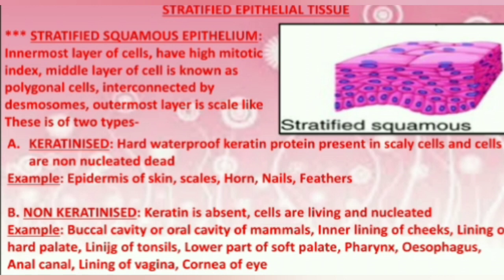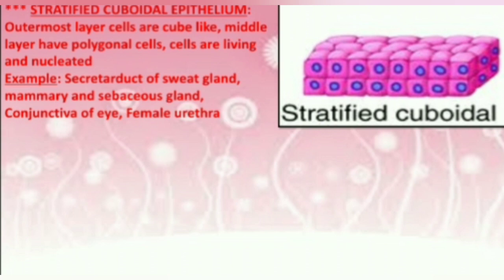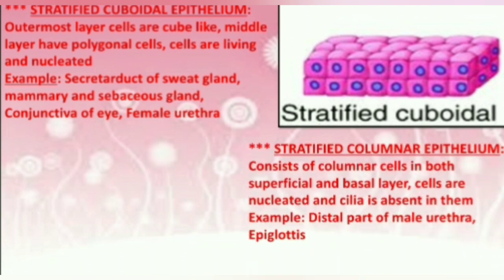The stratified cuboidal epithelium has cube-like cells in the outermost layer, polygonal cells in the medial layer, and all cells are living and nucleated. The stratified columnar epithelium consists of columnar cells in both the superficial and basal layers.